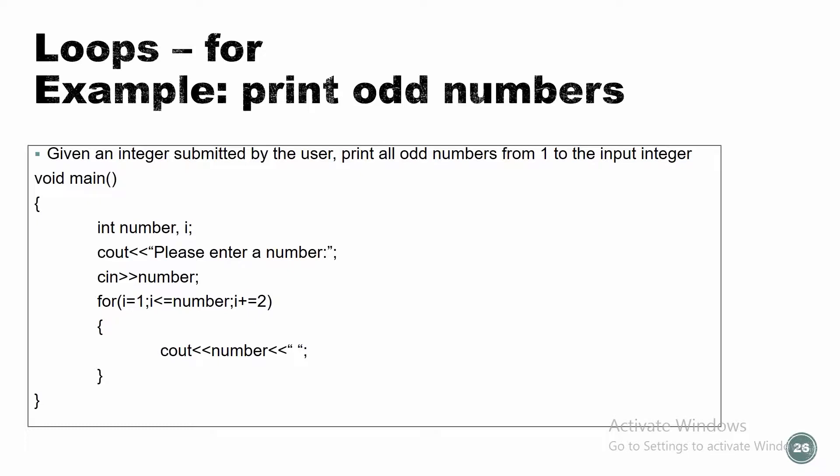Let's look at an example together — print odd numbers. Given an integer submitted by the user, print all odd numbers from one to that input integer. This is our main entry point. We declare a variable 'number' and a variable 'i' that I'm going to use inside the loop. I ask the user to enter a number using cout, read it with cin, and then start the loop. We use the 'i' variable to manage the loop. We initialize 'i' to one — the compiler needs to know where we're starting.